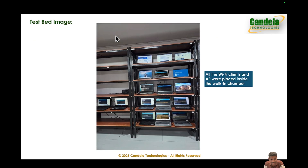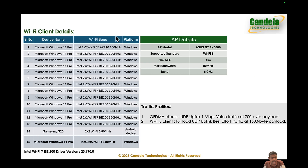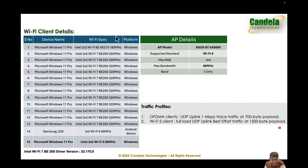The AP used was an Asus GT-AX 6000, a Wi-Fi 6 4x4 AP set to 80 MHz bandwidth, and testing was done in 5 GHz. All clients were at short range from the AP inside a shielded room. The traffic profile for the 14 OFDMA clients was UDP uplink 1 Mbps using voice access category with 700 byte frames, simulating voice traffic. The Wi-Fi 5 client ran full load UDP uplink using best-effort traffic at 1500 byte payload size.